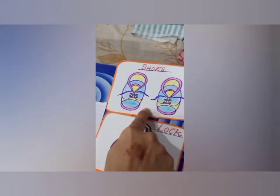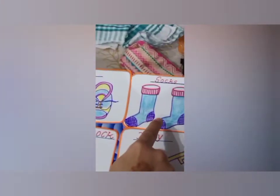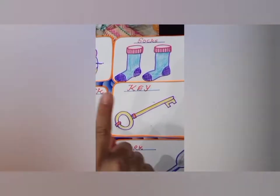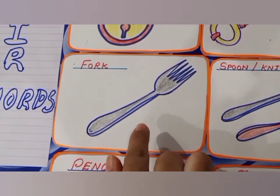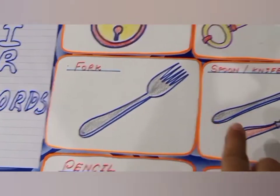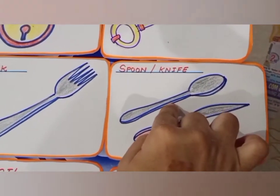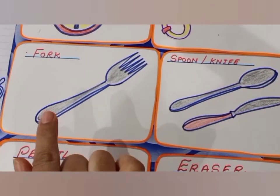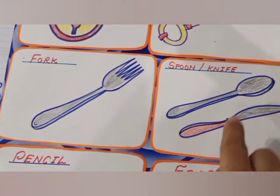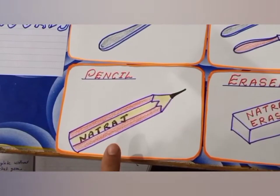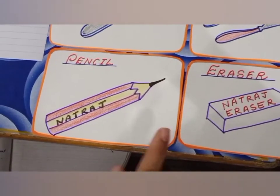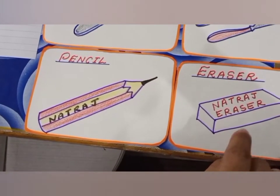Next pair is shoes and socks. We cannot wear shoes without socks. This is lock and key. We cannot lock our house without key. Next pair is fork and knife or spoon. At the time of eating food, we use fork and spoon or knife together. This is pencil and eraser. If we write something wrong, we always use the eraser.